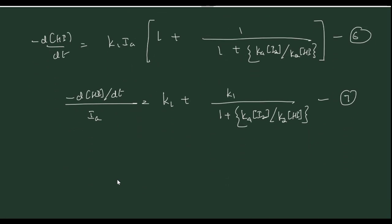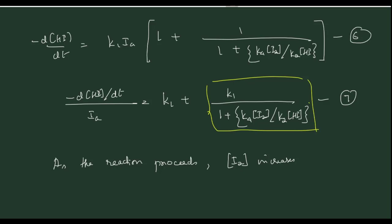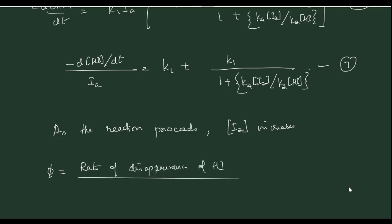As the reaction proceeds, the concentration of I2 increases (by step 3). When the concentration of I2 increases, the denominator in equation 7 increases, so the second term decreases. Therefore, the overall rate of disappearance of HI decreases. Since quantum yield φ = rate of disappearance of HI / rate of absorption of light, when the rate of disappearance of HI decreases, the quantum yield also decreases.